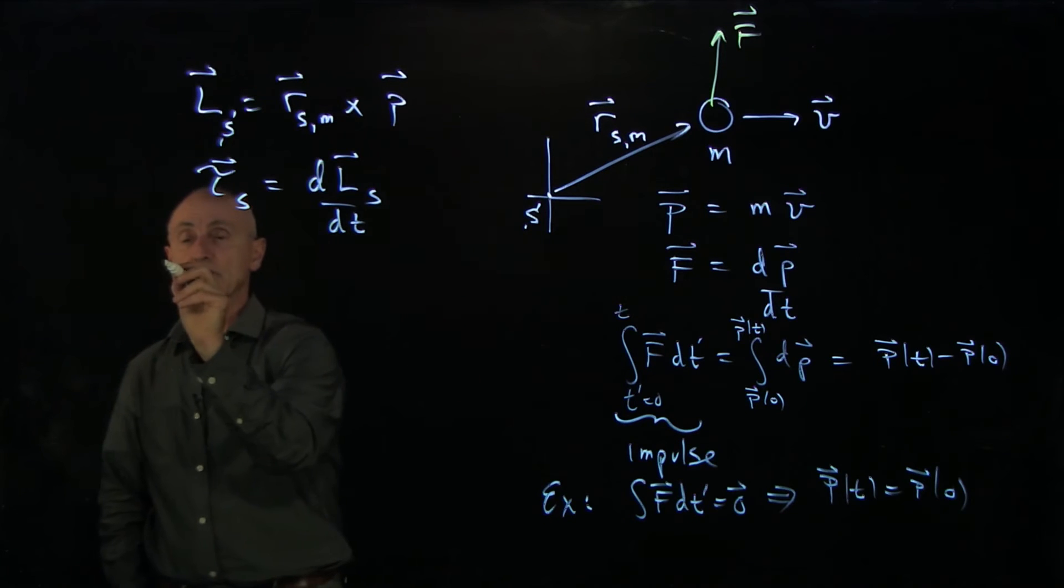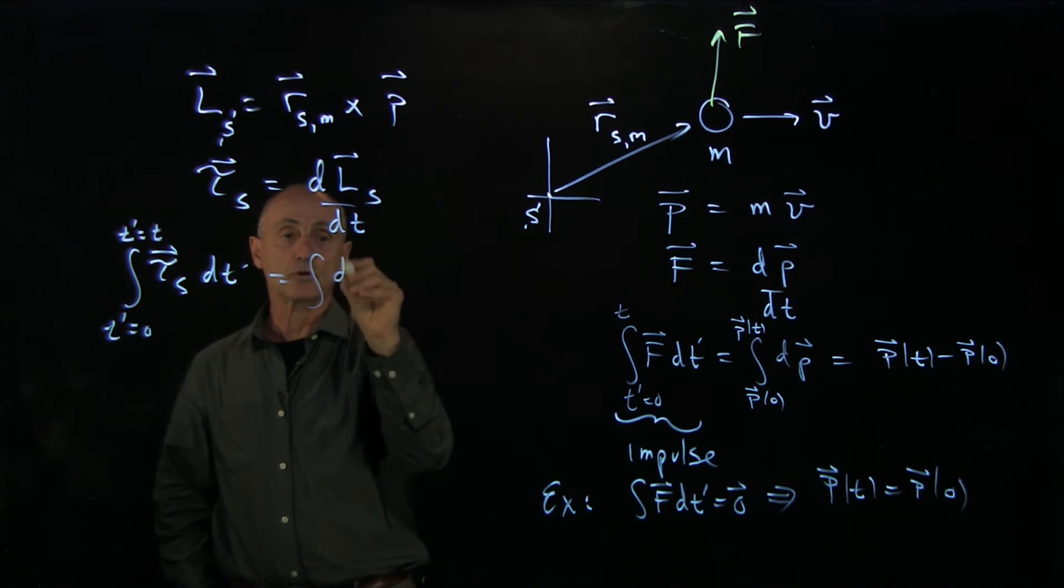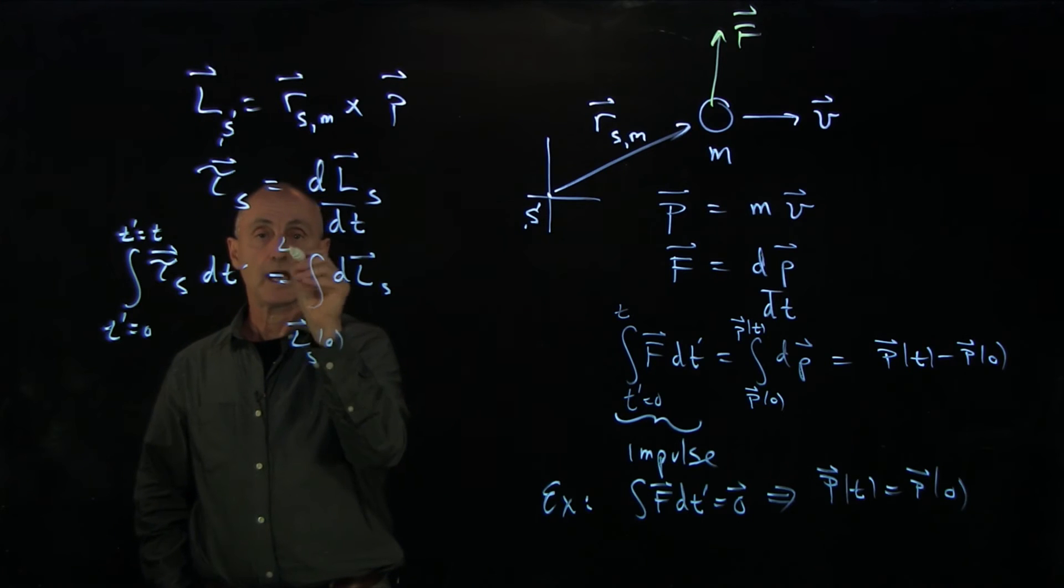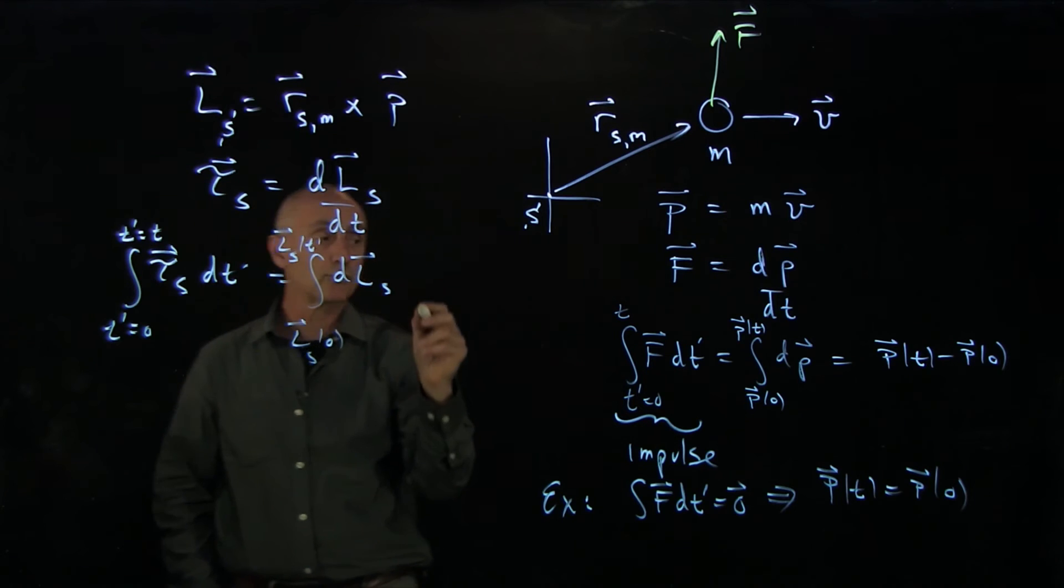Now let's talk about the angular impulse, which is integrating the torque from sometime t' = 0 to sometime t. That's the integral of the angular momentum about s. We're integrating this from some initial angular momentum to some final angular momentum.